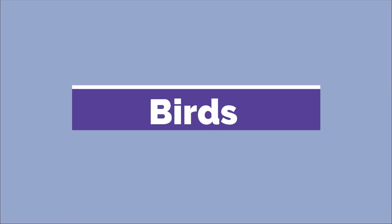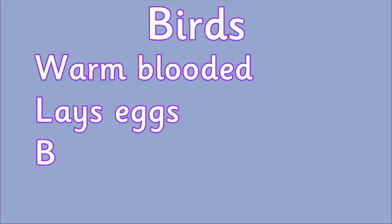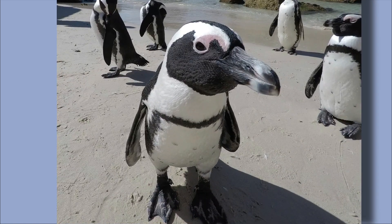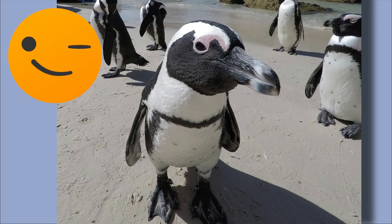Next we will look at birds. A bird is an animal that is warm-blooded and lays eggs. They have a beak, wings, two legs, and their bodies are covered with feathers. Most birds can fly with their wings. Can you think of a bird that can't fly? One bird that can't fly is a penguin. I bet you knew that one, didn't you!